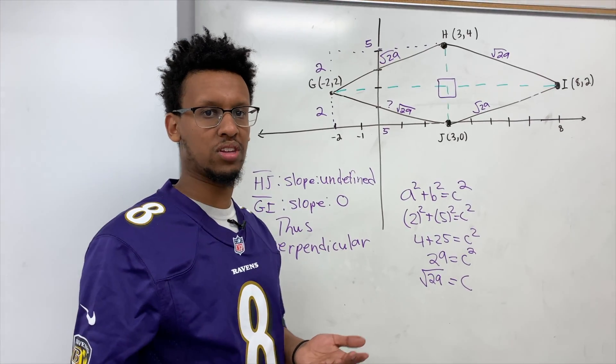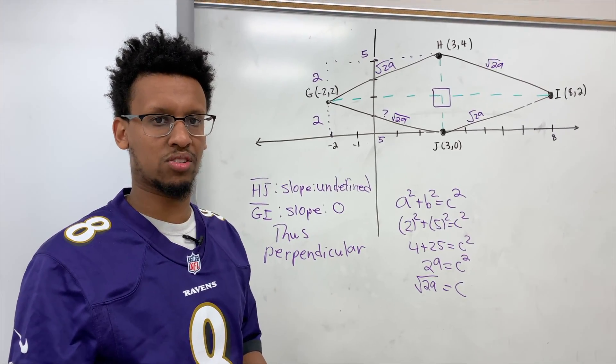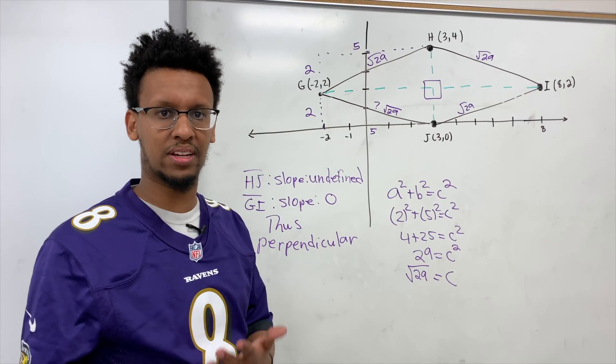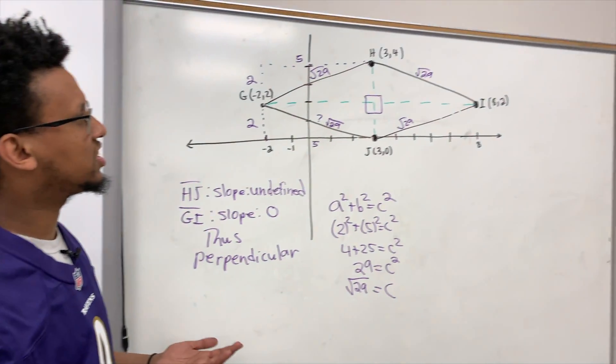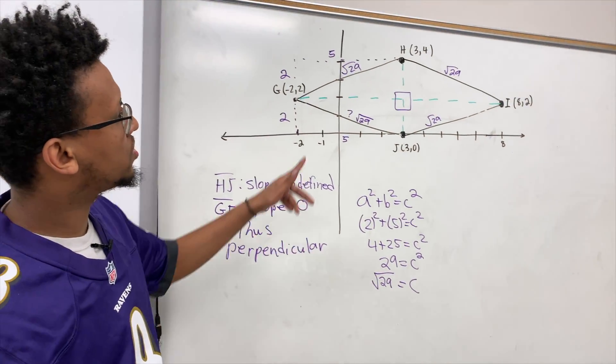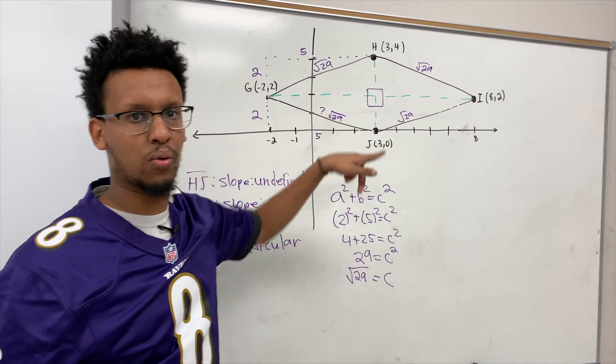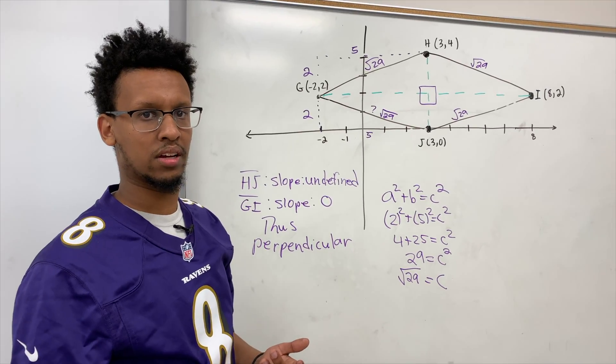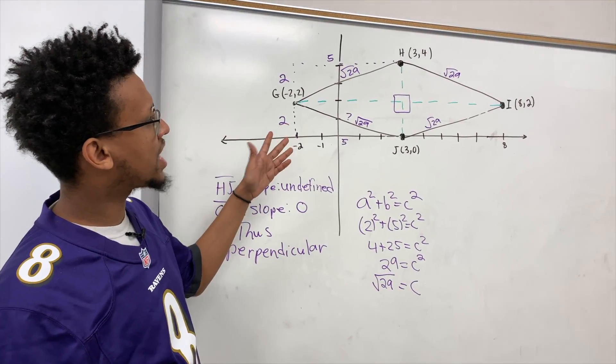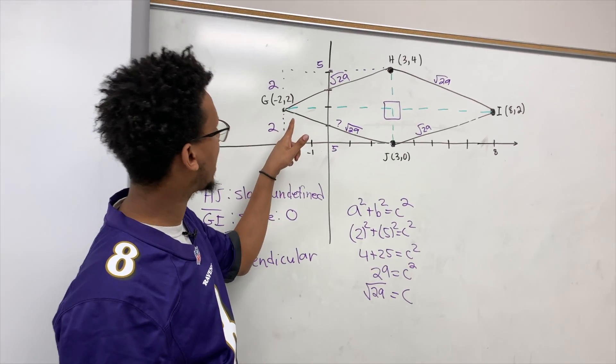But the only other question is, is this a square? Because the square also shares all of these properties that we just discussed. So an easy way to check if this is a square is to see if the diagonals are congruent, because in a square, diagonals are congruent. In a rhombus, they're not. And this one, once again, is a nice example, because you can actually count.